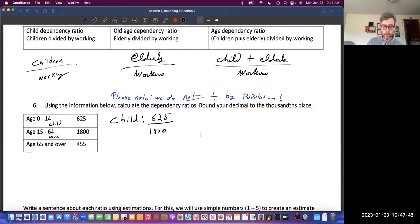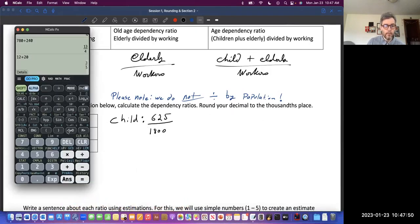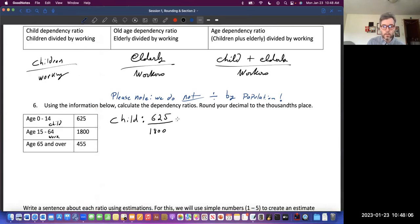In this group of information, there are 625 children, and the working age is 1,800. Now, as a decimal rounded to the thousandth, the only thing I'm doing is dividing that. So 0.3472, and we round to the thousandth place. That would be equal to 0.347.